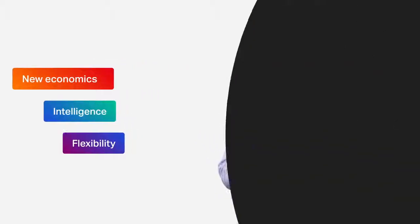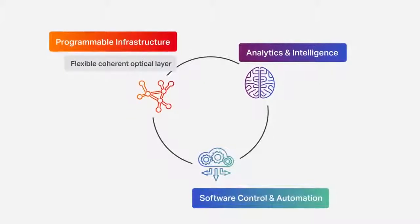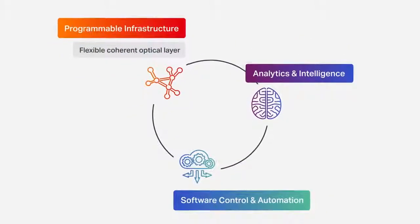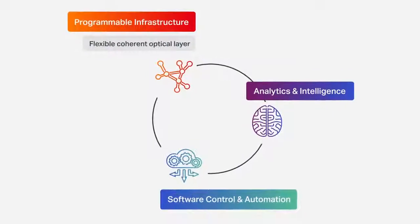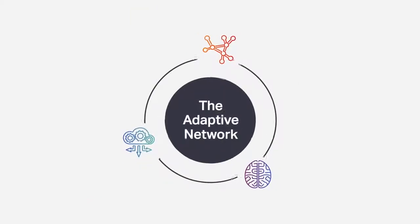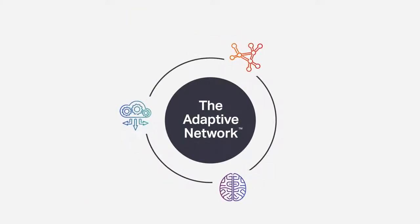This can be achieved by building network architectures that are not locked by any chassis or slot limitations. In other words, build a solid, flexible optical layer which can grow seamlessly, leveraging the new innovations of coherent technology to lay the foundation for the next-gen adaptive network of tomorrow.